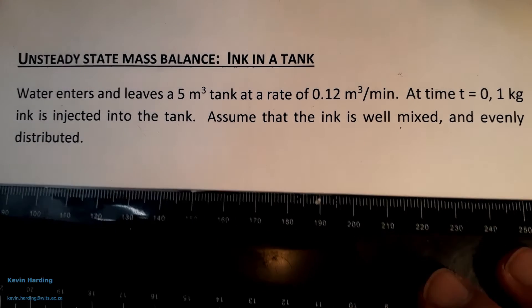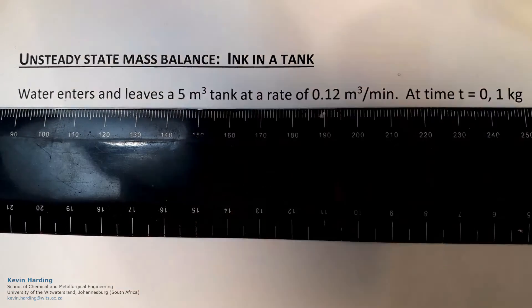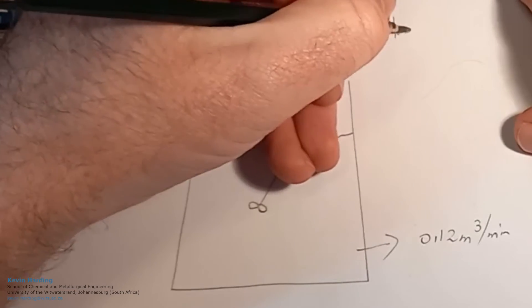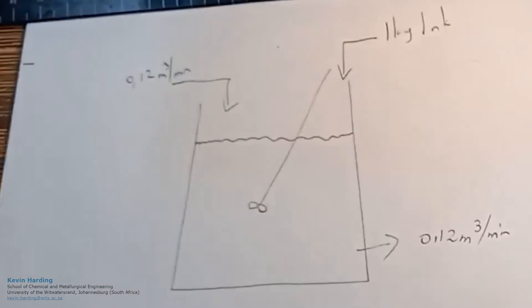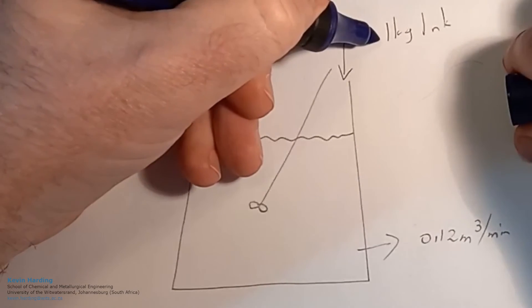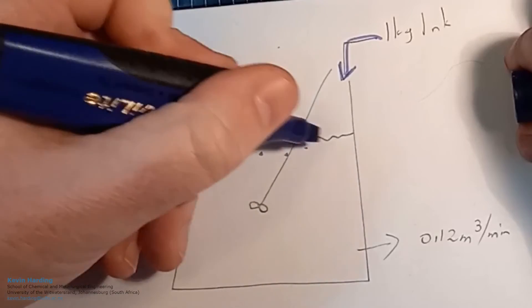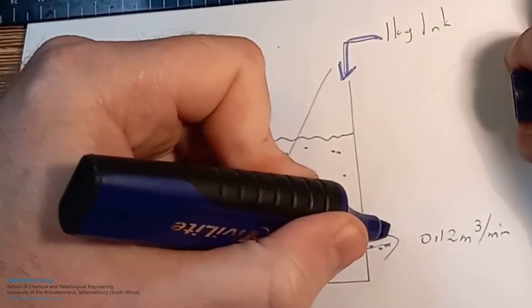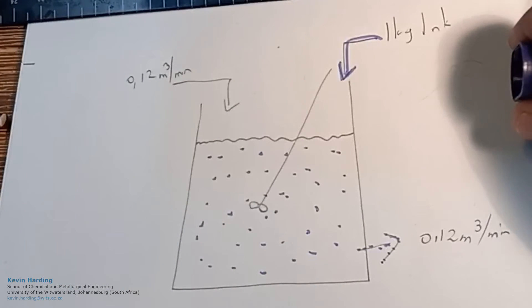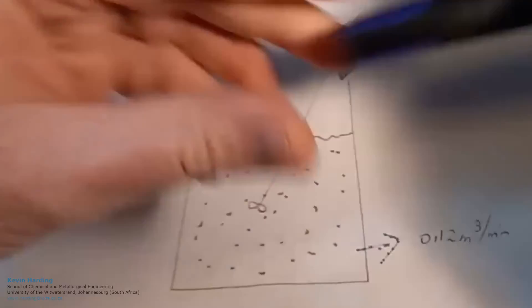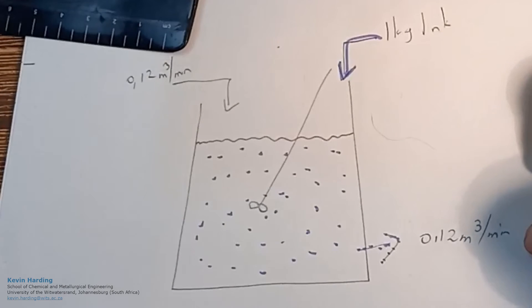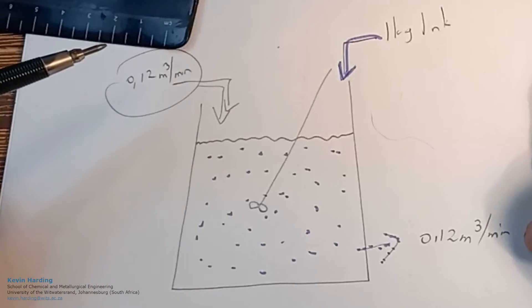Now we look at the mass balance for the ink. At time t equals 0, 1 kilogram of ink is injected into the tank — so everything is in at time 0. Since the tank is well mixed, the concentration of ink is equal throughout, meaning the concentration coming out with the water is uniform at any given time. This problem is not steady state: ink enters at t=0, and after that no ink comes in, but ink does leave. The concentration changes as incoming water dilutes the ink over time.